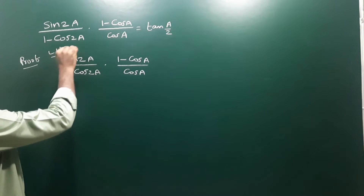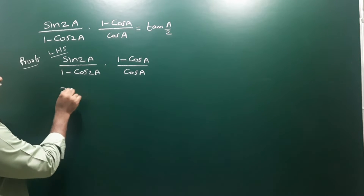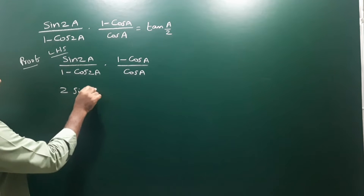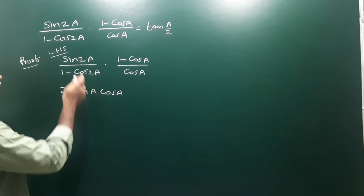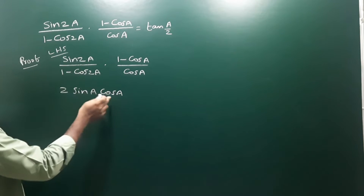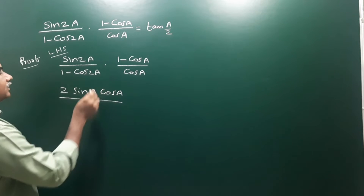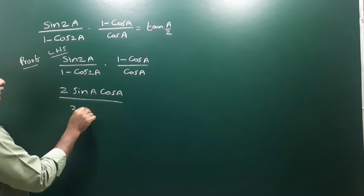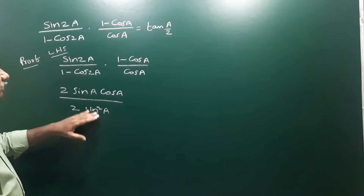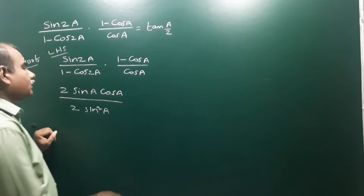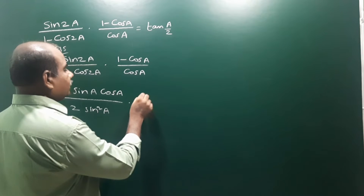We know that sin 2a has the formula 2 sin a cos a. The formula for 1 minus cos 2a is 2 sin² a. And for 1 minus cos a, it is equal to 2 sin²(a/2).